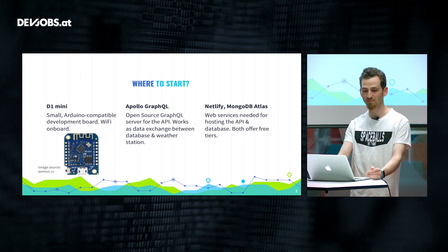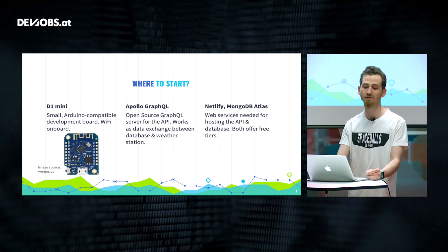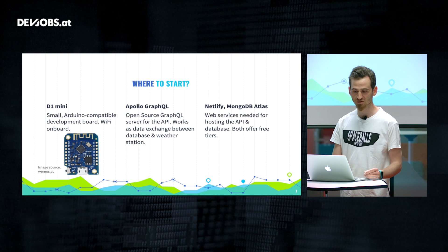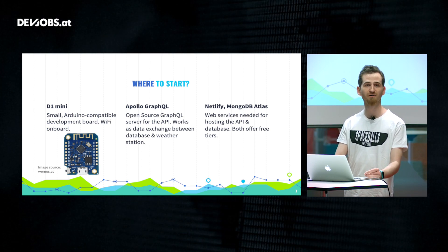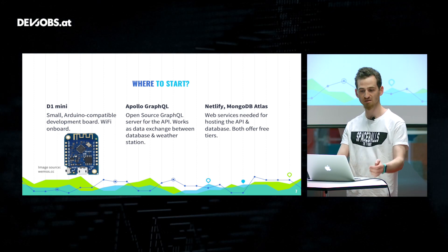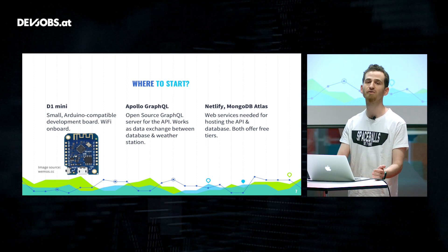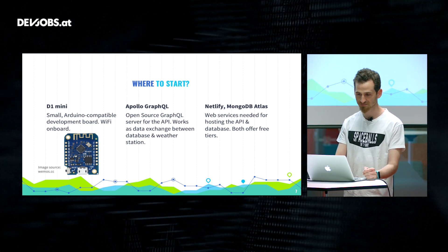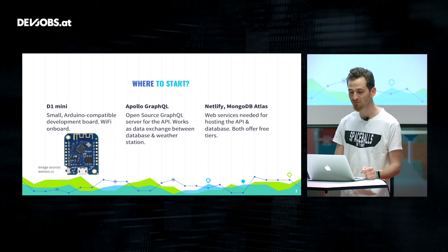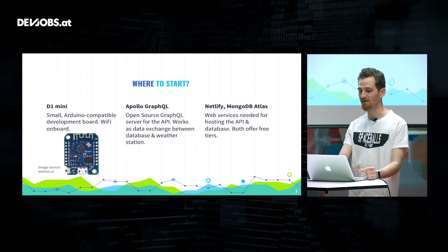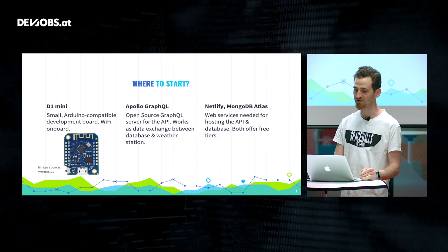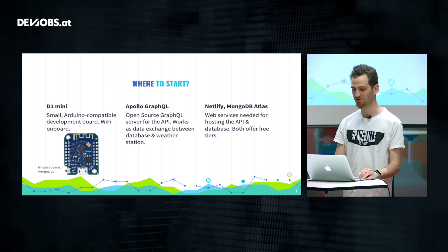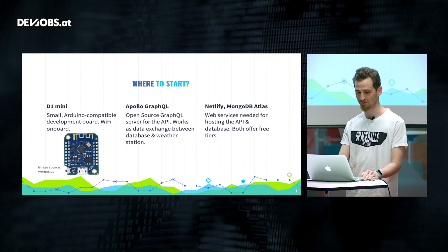For hardware, I looked for the cheapest possible development board and found the D1 Mini — a small Arduino-compatible board whose main advantage is built-in Wi-Fi, so you can connect to the internet and perform communication tasks without attaching anything extra. The Apollo GraphQL server and everything web-based is hosted on Netlify and MongoDB Atlas, because both offer generous free tiers. I'm not affiliated with either of them.